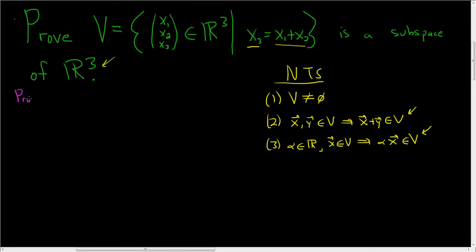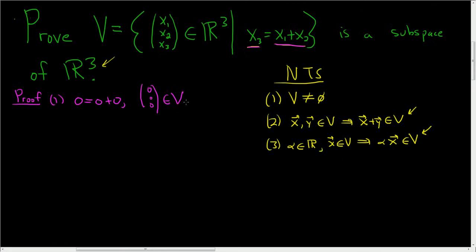Let's go ahead and prove this. It's a pretty easy proof. We'll start by showing condition 1 — we have to show it's not empty. We note that 0 = 0 + 0, so this means that the vector (0, 0, 0) is in V. So it does contain the zero vector, so it is, in fact, non-empty. Condition 1 is done.